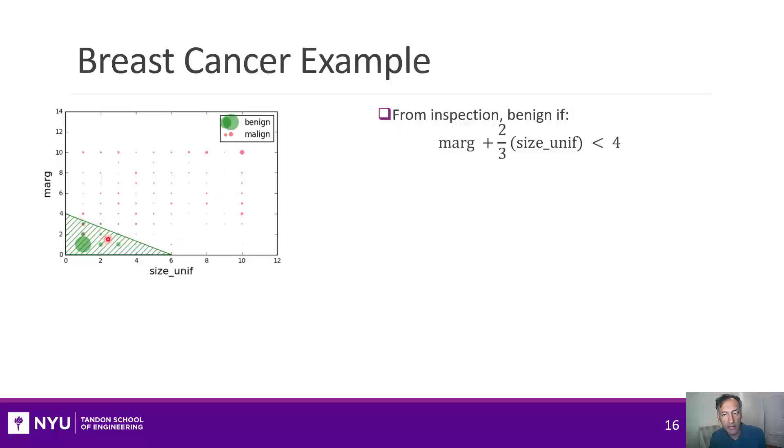Why is this a linear classifier? Well, I could write it mathematically as follows. This rule up here is equivalent to the following. I'm going to take a linear combination of my two data features with the correctly chosen coefficients. It's 1 times the margin plus 2 thirds times the size, and there's a minus 4 intercept. It's important to get these signs right. And then, from this, I'm going to say y hat is 1 with the convention that 1 means malignant when this value is positive, and it is 0 when it is negative. So, I've just rewritten this rule that I can just draw here in math.